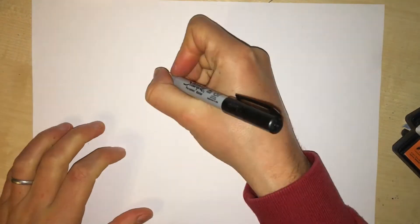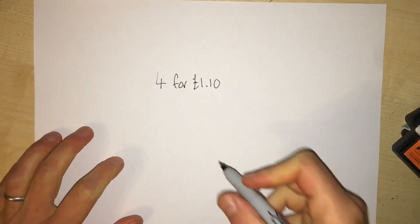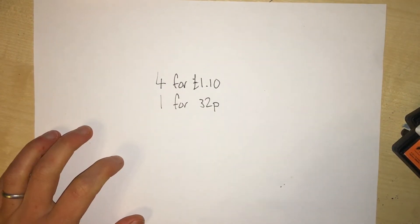Those four cost me £1.10. Let's write that information down. Now I could buy the beans in individual cans for 32p each. There was also a special offer on - I could buy three for 80p.